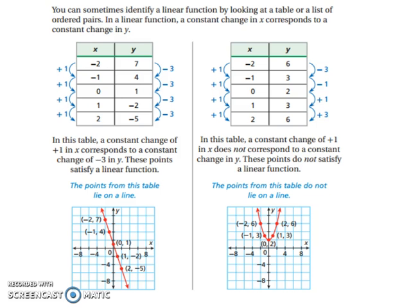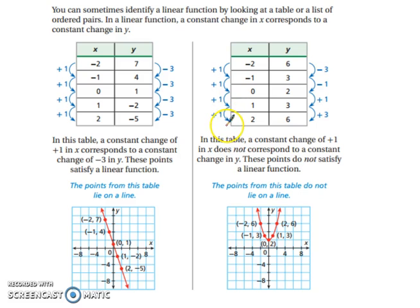You can sometimes identify a linear function by looking at a table or list of ordered pairs. In a linear function, a constant change in x corresponds to a constant change in y. In the first table, the x values increase by plus one each time, and the y values decrease by minus three each time — that constant rate makes it linear. In the second table, x also increases by plus one, but the y values change by minus three, minus one, plus one, plus three — these are not the same, so the function is no longer linear.